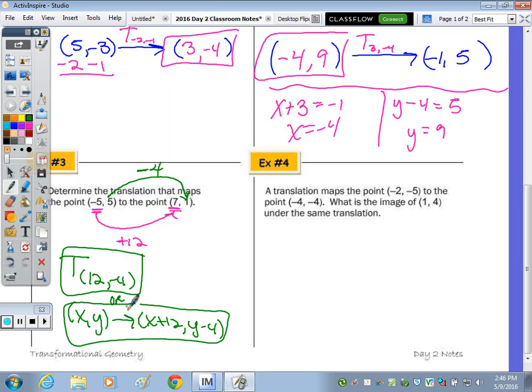Last one on the front. A translation maps the point (-2, -5) to (2). So we're going from there to here. So what is that translation? We're going to find the image of (1, 4) under the same translation. So to go from a -2 left to a -4, how did we shift? Or what did we do? Add or subtract? Subtract 2. And then to go from a -5 to a -4, you add 1. You don't have to put the plus. So it's just T₍₋₂,₁₎. So subtract the 2, add the 1. Under the same translation, the image of (1, 4) is (-1, 5).